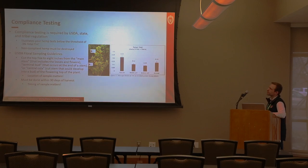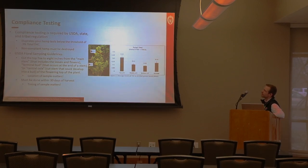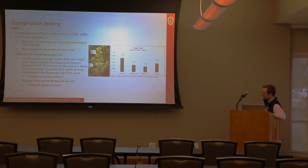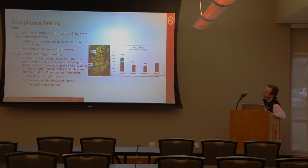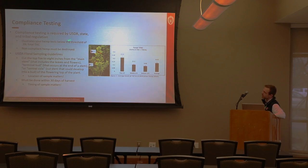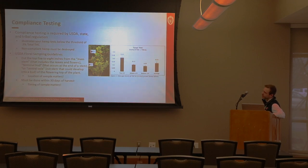For compliance testing, growers are required to either have an inspection agent come to their field and sample the hemp before harvest, or submit samples to an approved laboratory prior to harvest. Importantly, where you sample on the plant matters enormously — cannabinoid content including THC and CBD decreases as you move down the plant from top to bottom. Samples taken from the lower part of the plant early in the season will not be representative of what a regulatory sampling agent would collect later. Follow the same sampling guidelines an agent would use when monitoring cannabinoids throughout the season.